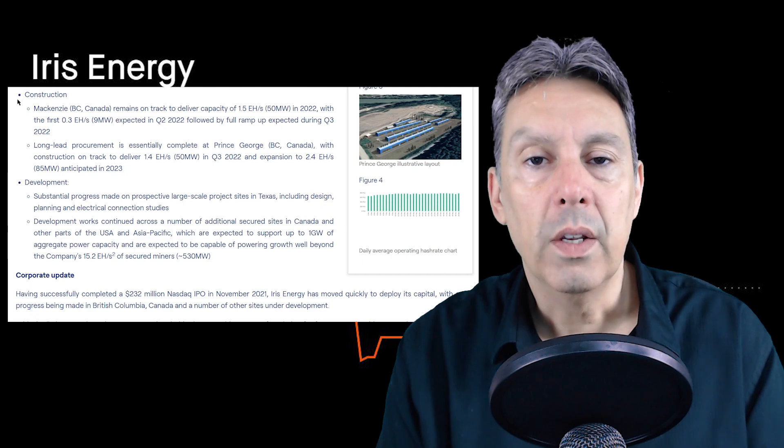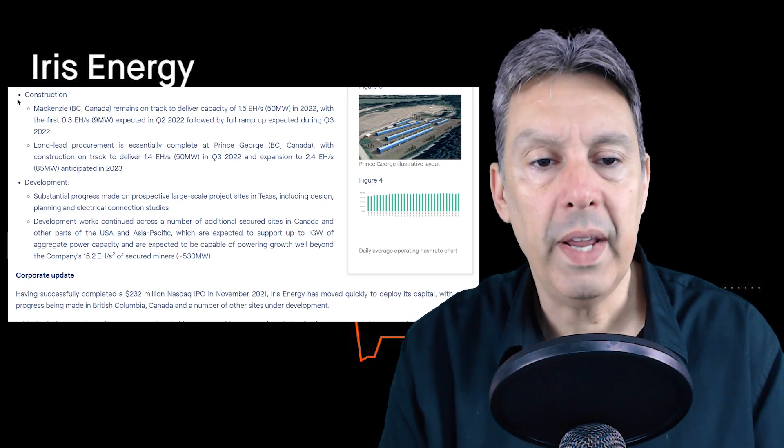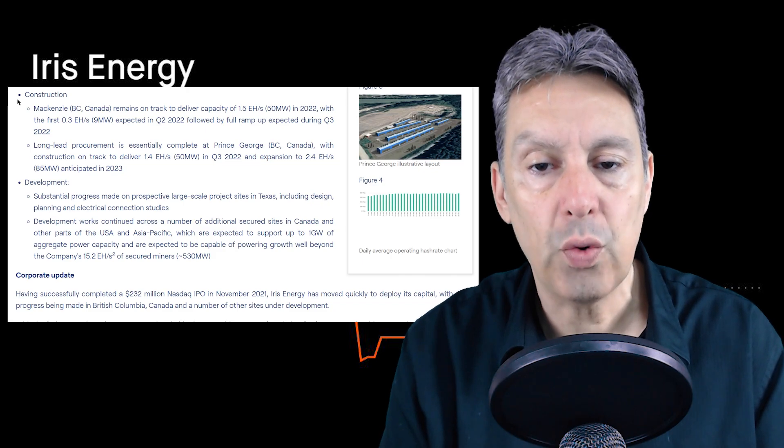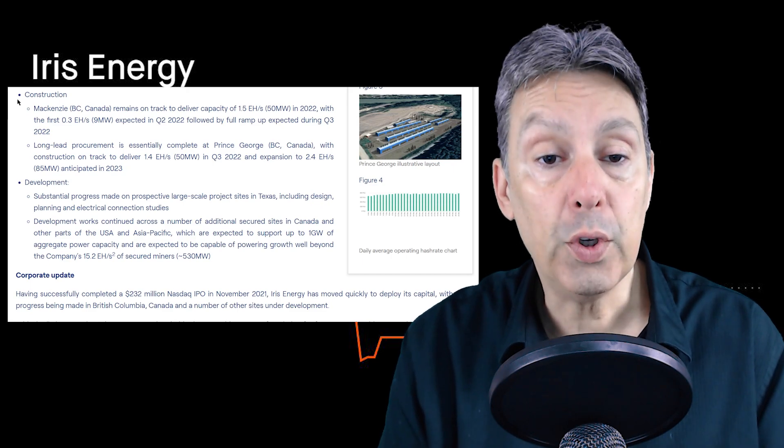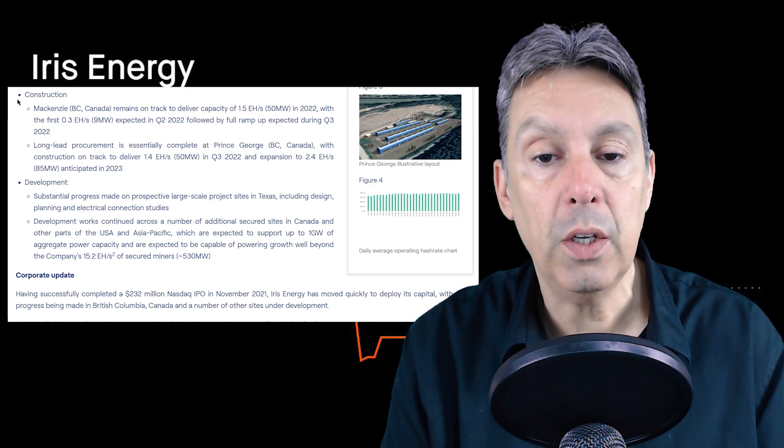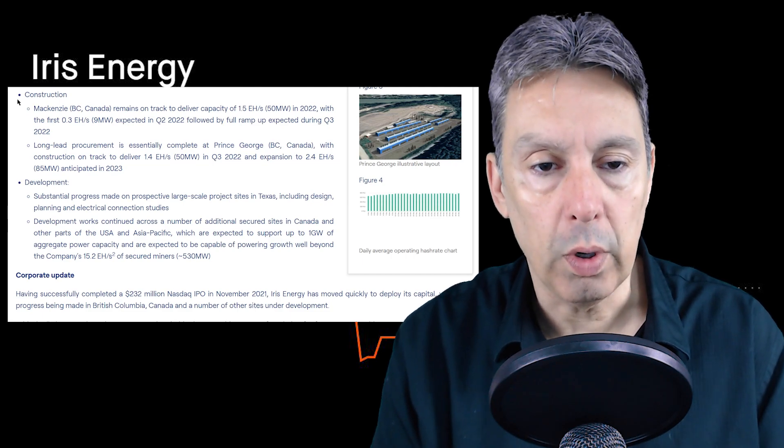Then they've got a section about their construction. They've got construction underway in McKenzie and they say that remains on track to deliver 1.5 exahash per second in 2022, with the first 0.3 exahash expected in Q2 of 2022, full ramp up by the end of the third quarter. All of their hash rate right now is at the Canal Flats facility, which we just talked about previously.